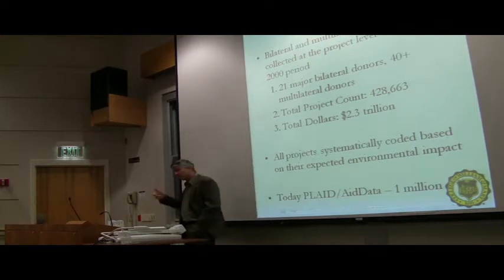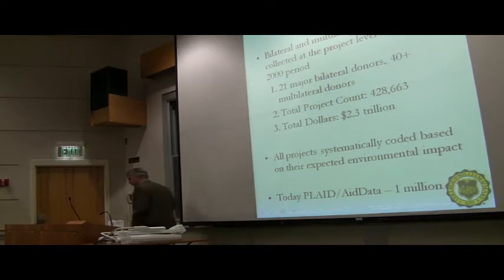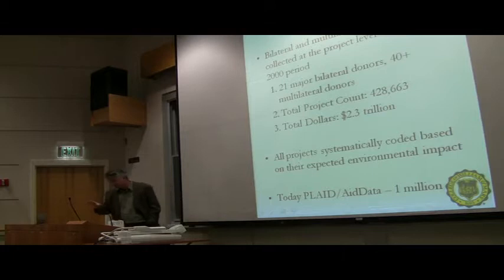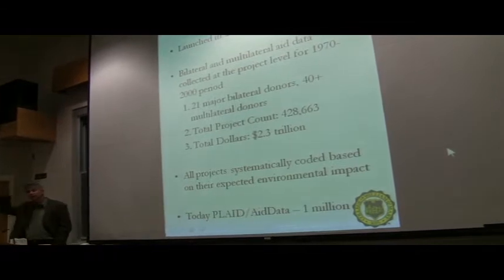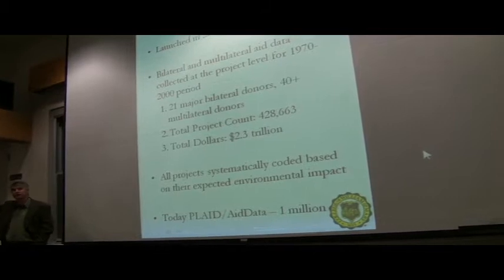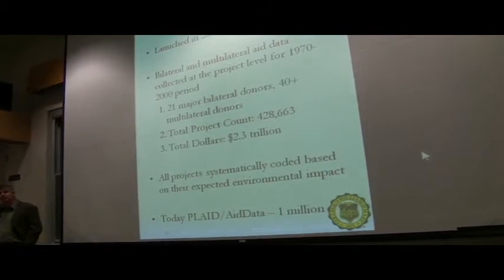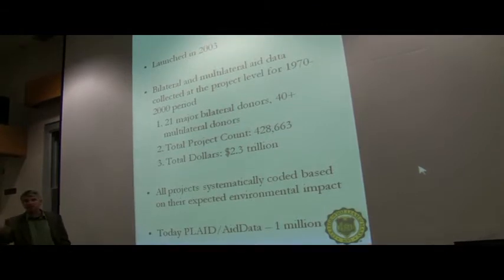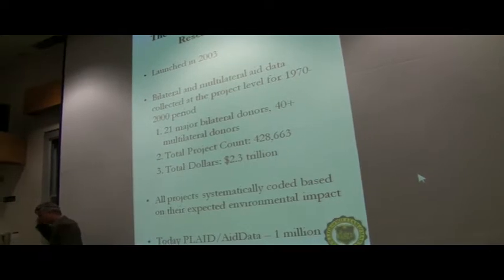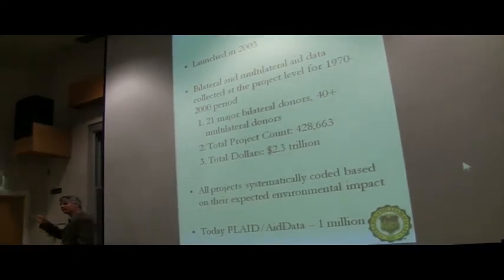To make a long story short, we went out and got a National Science Foundation grant and we built a database, which I think is the most comprehensive database in the world on foreign aid transfers. The database we built for this book had 428,000 projects in it — 428,000 rows of data — with 50 columns telling you different things about each project: how much money, who gave it, what year it was, what the terms of the loan were, and what its environmental impact would be.